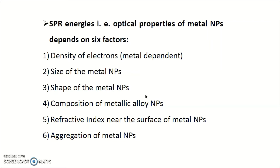Fourth is the composition of metallic alloys. Suppose you have silver and gold and you make an alloy — you start to add silver to gold. It is not pure silver or pure gold, but maybe a 30-70 or 50-50 proportion ratio. If you make alloys of metal nanoparticles, their optical properties are going to change.